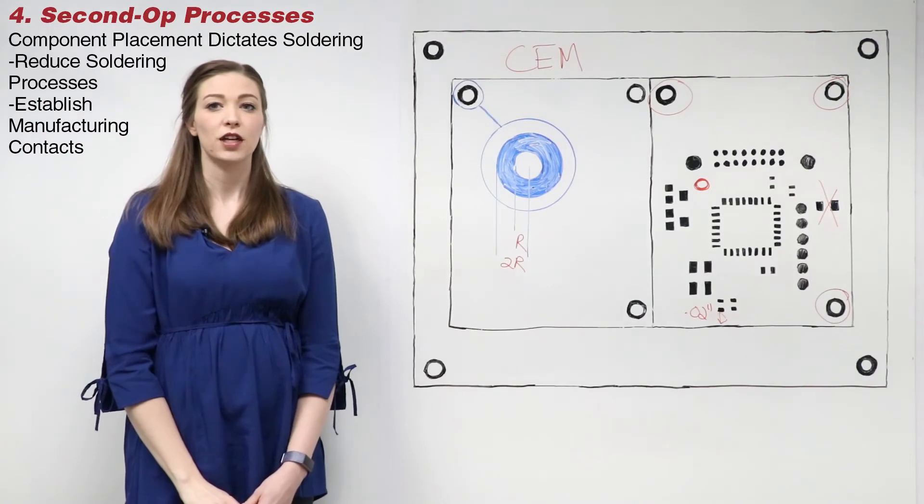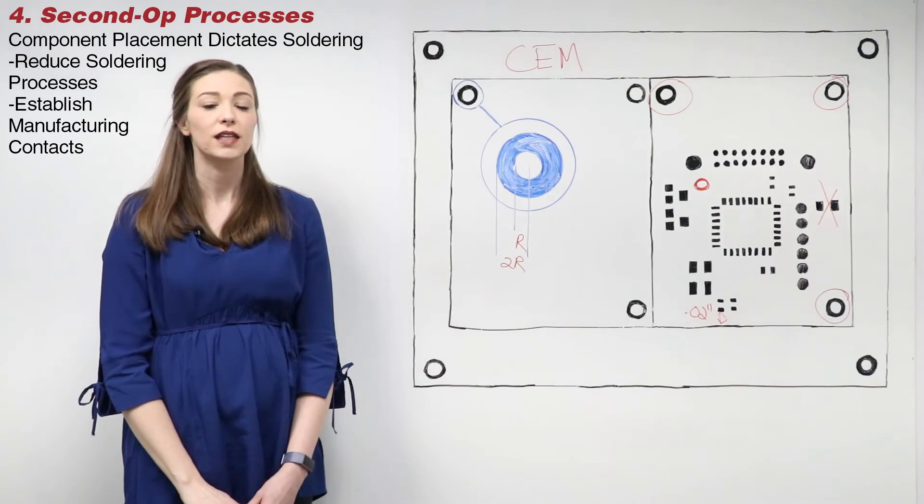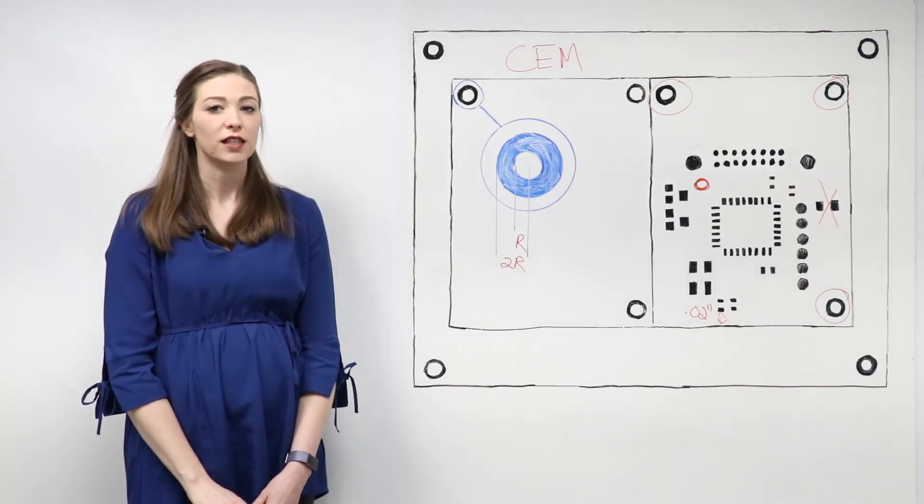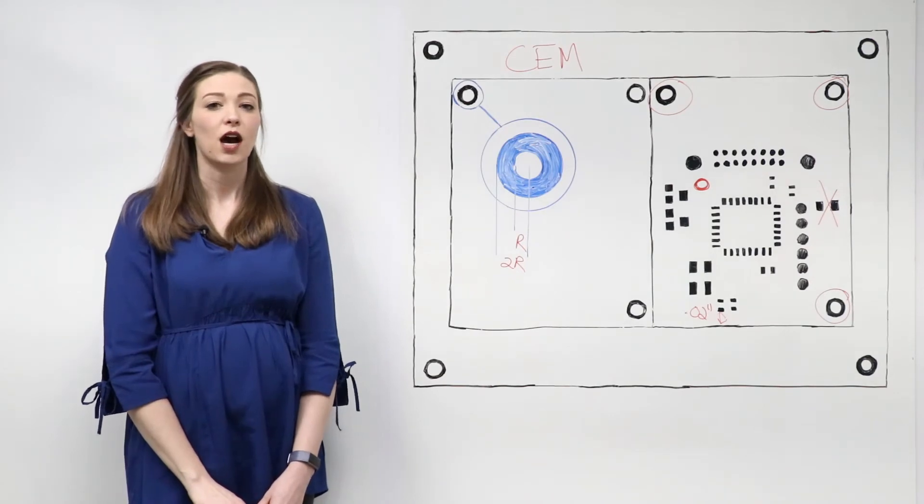Establishing manufacturing contacts and discussing these topics prior to PCB layout will help you design a board that can be easily produced. Minimizing the number of manufacturing processes and reducing possible issues in manufacturing will save you significant time and money, keeping your project on time and on budget.